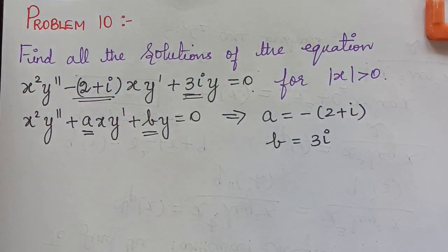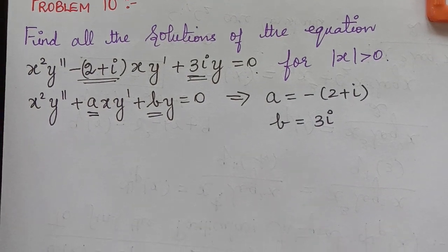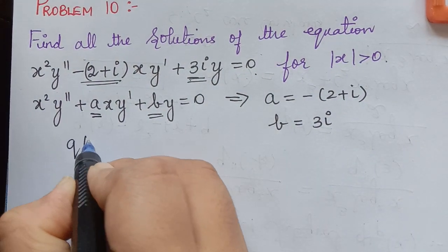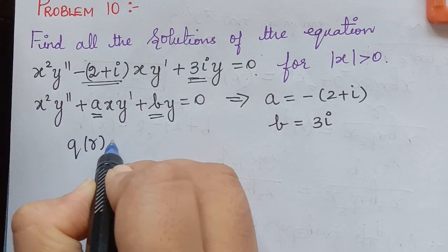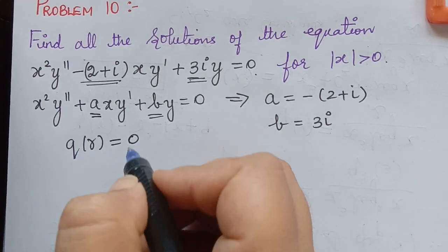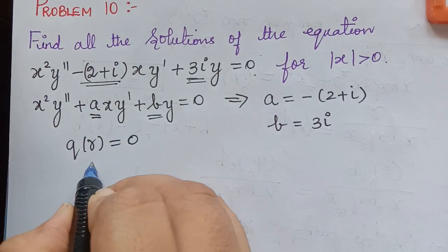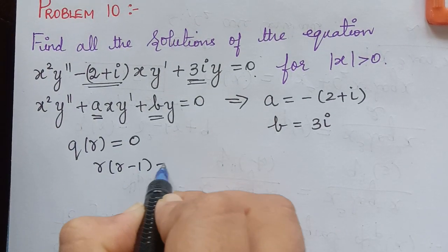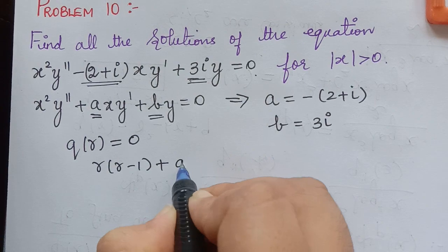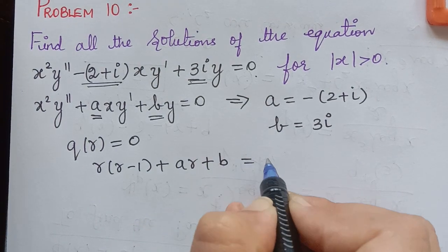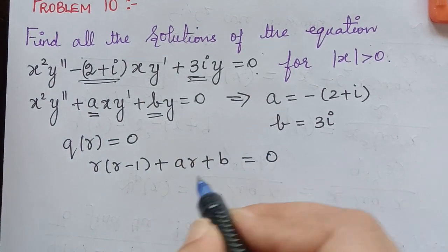Now we have to write the indicial polynomial. The indicial equation is q(r) equals 0, where q(r) equals r(r minus 1) plus a·r plus b equals 0.